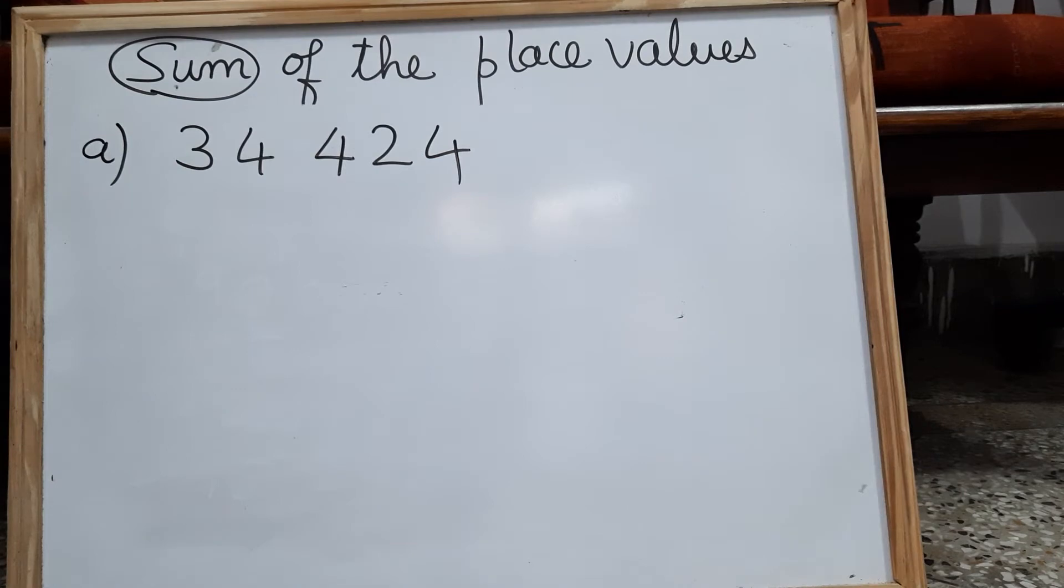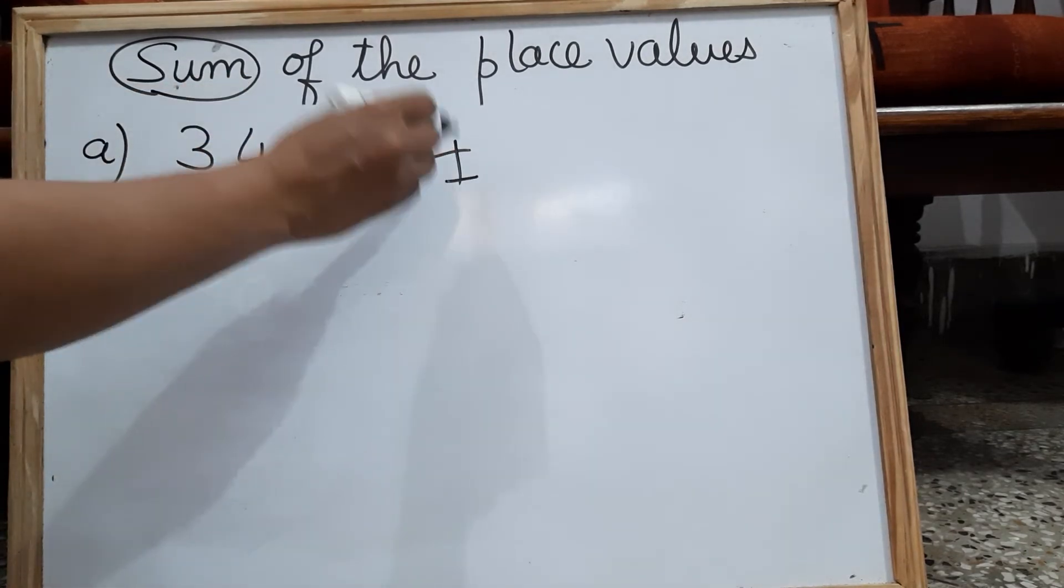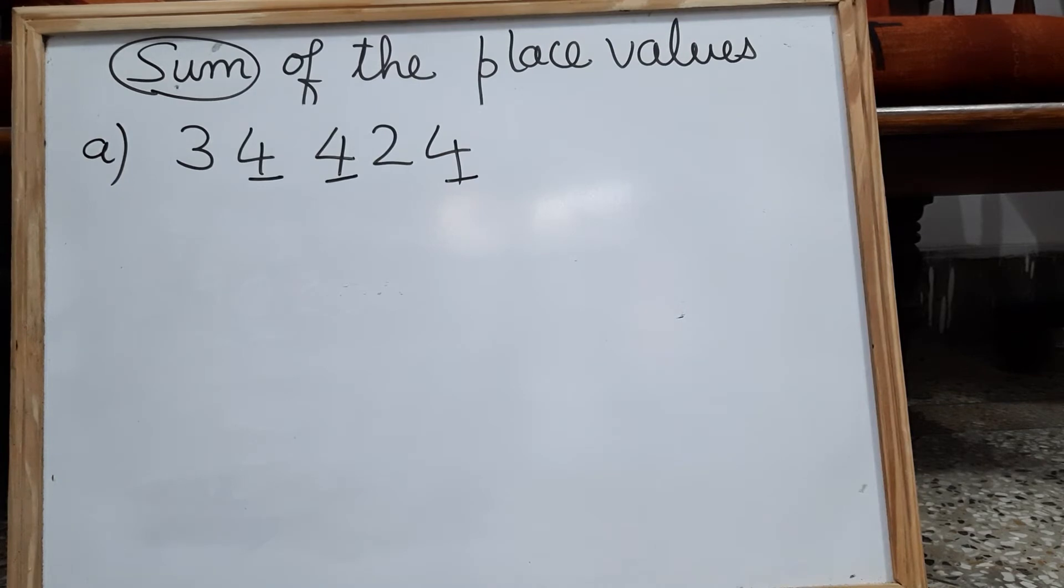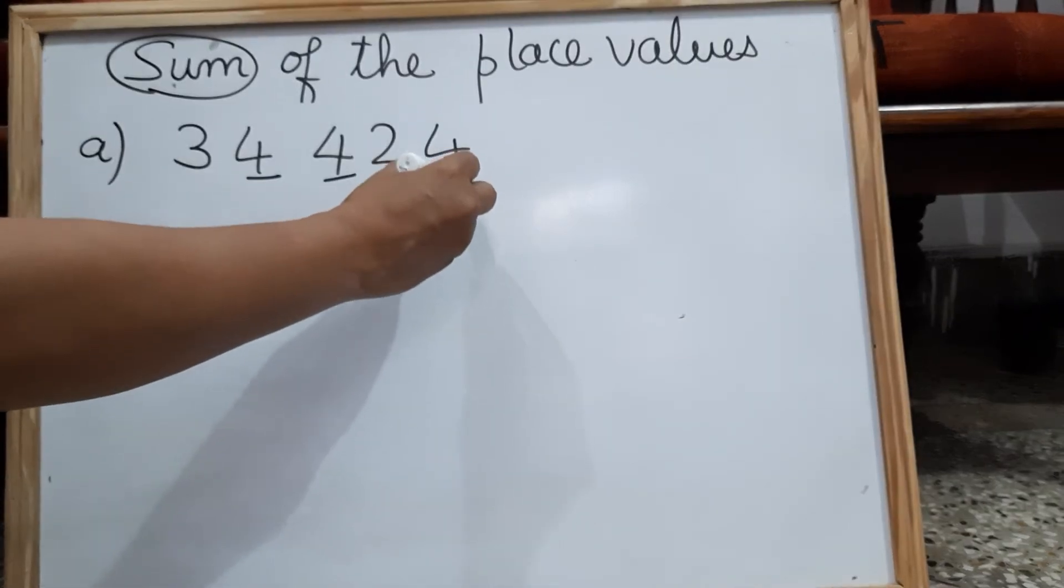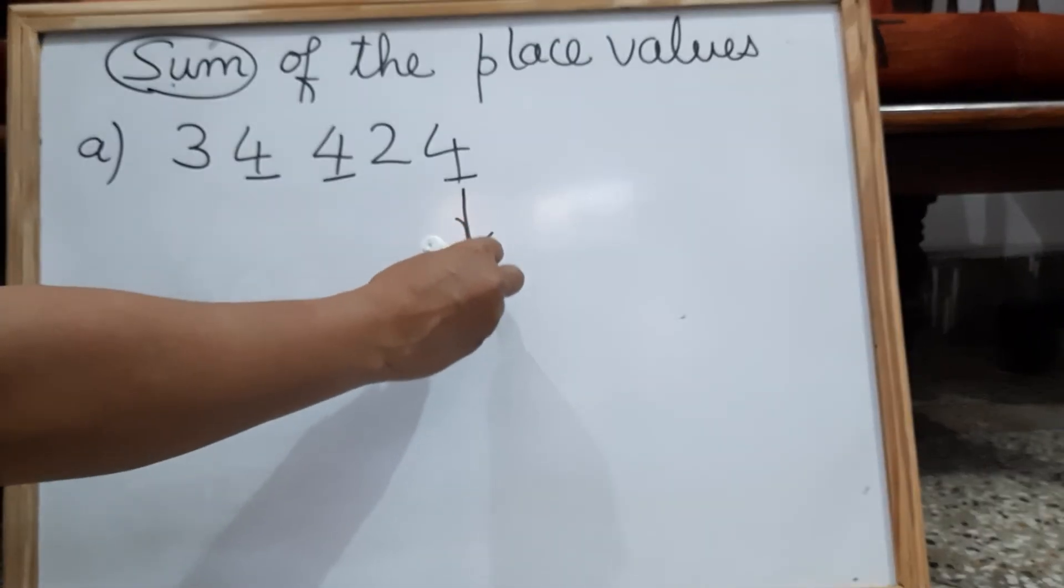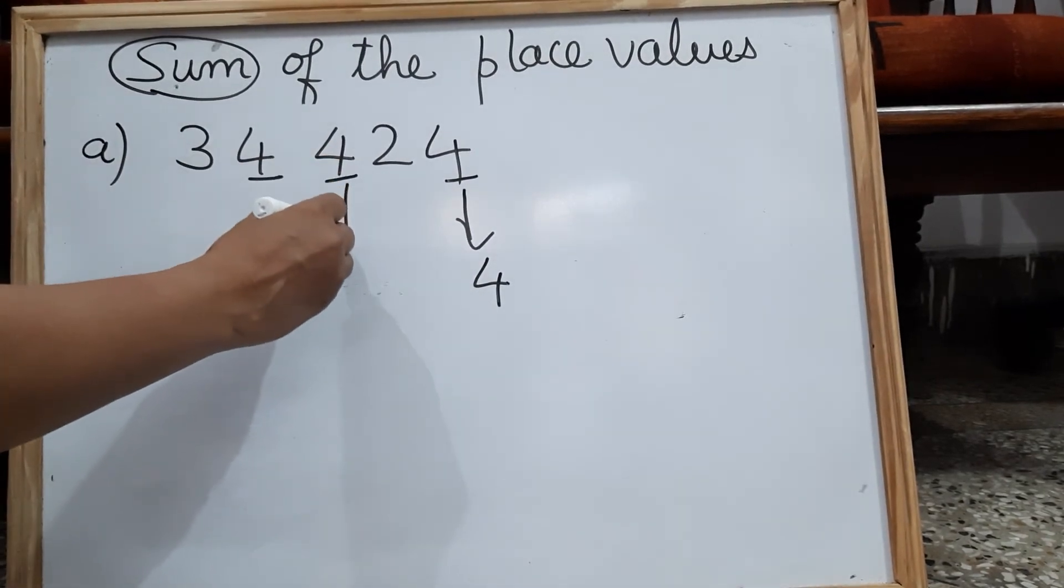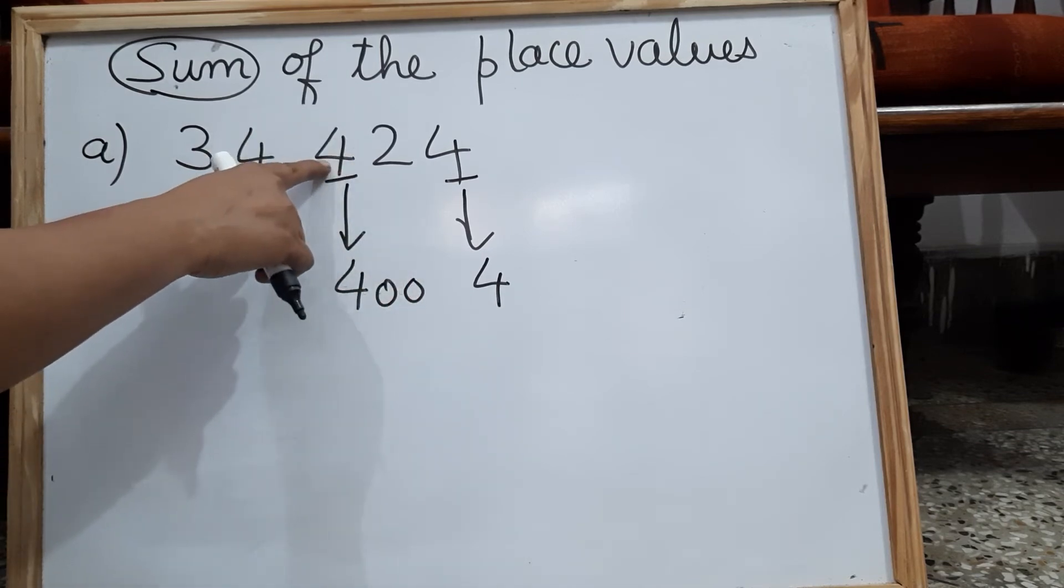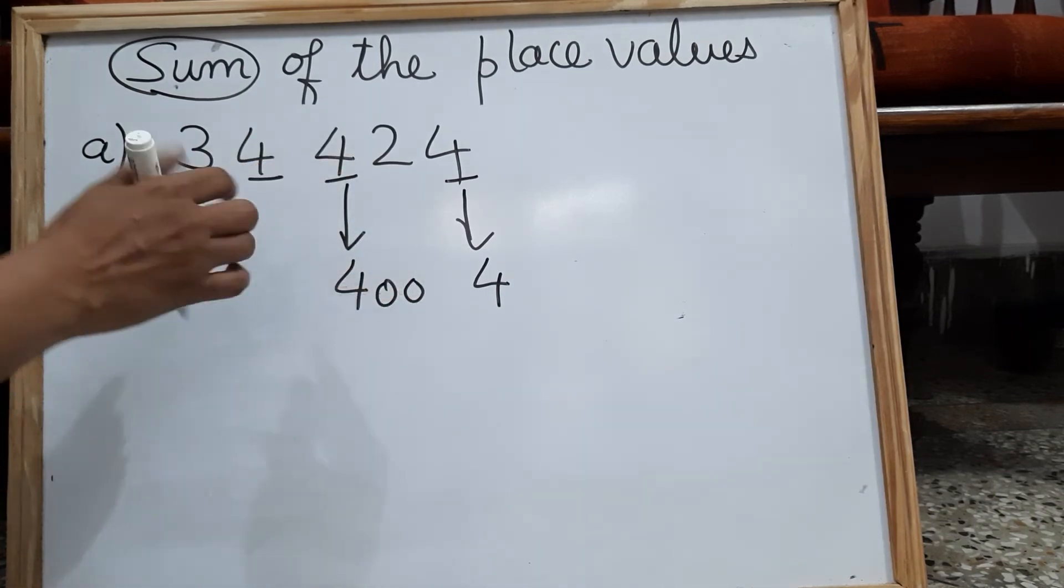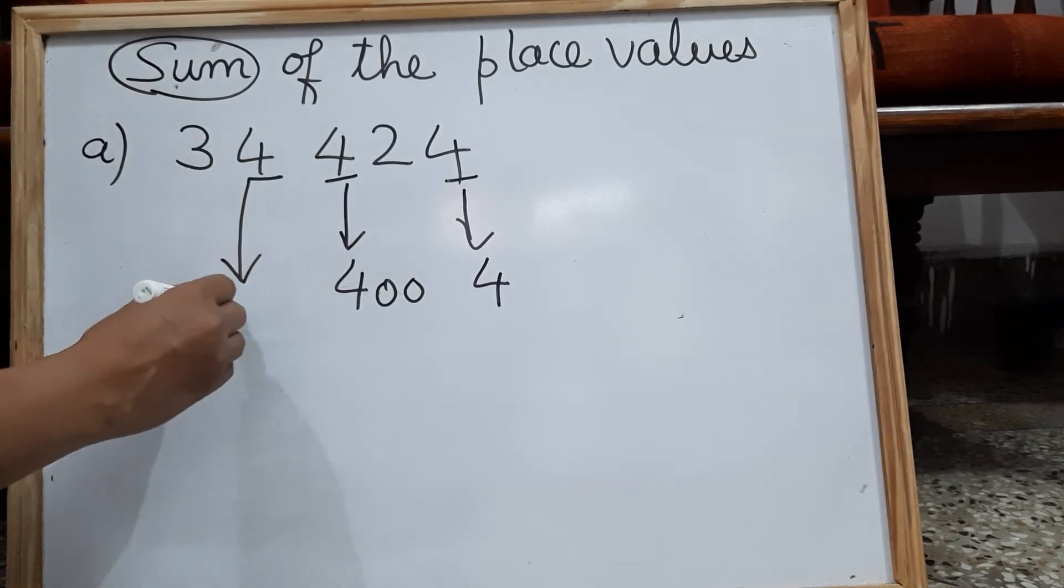This is the number and you have to find the place value of underlined digits. So place value of this 4 is 4 ones. You can write 4. This is 400, it is in 100 place, so it becomes 400. And the place value of this 4 is 4000.